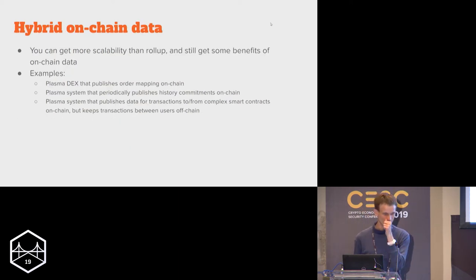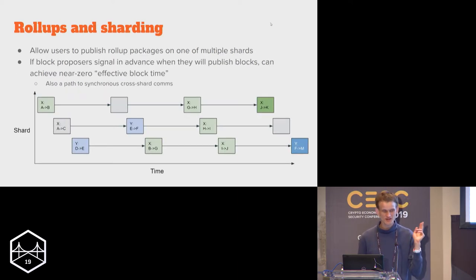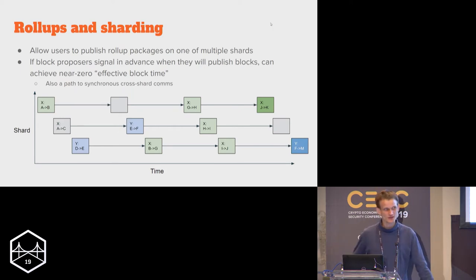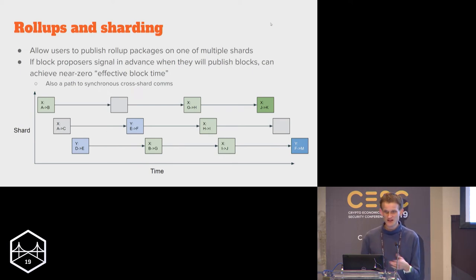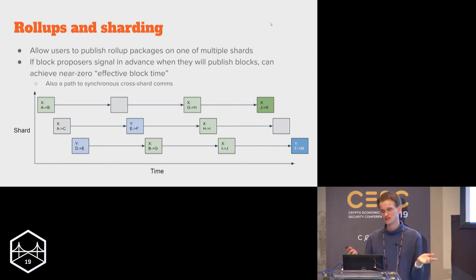There are also hybrid routes — plasma systems that use plasma to process payments, but rollup-style techniques for anything more complicated. On rollups and sharding: Ethereum 2 phase one is sharded data, even before phase two which is sharded computation. Sharded data is potentially multiple megabytes per second being processed by consensus. Multiple megabytes per second divided by the 12 bytes you need to send a rollup transaction gives very high TPS. You can also have a rollup system where you take information together from different shards communicating asynchronously, and clients can verify ahead of time that a transaction got included, treating it as final.